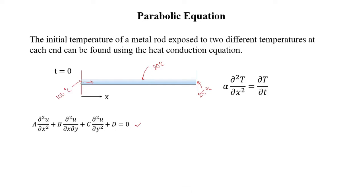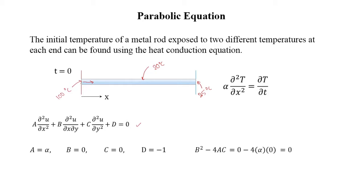A one-to-one comparison with our equation leads us to: A is equal to alpha, B is equal to zero, C is equal to zero, and D is equal to minus one. We now put these values into B squared minus 4AC. So we have B equal to zero minus four times A, which is equal to alpha, and C equal to zero. Hence B squared minus 4AC is equal to zero, and this particular equation is therefore called a parabolic equation.